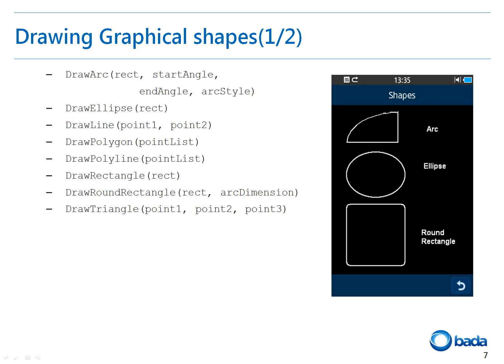Bada provides various shape drawing functions. The methods have a very simple and easy to understand naming convention — the name starts with 'draw' followed by the shape name. For example, the draw rectangle method will draw a rectangle. Bada supports the arc, ellipse, line, polygon, polyline, rectangle, round rectangle, and triangle drawing functions. The arguments accepted by these methods are in sync with what needs to be drawn. For example, draw triangle needs three points, draw ellipse needs the coordinates of the rectangle inside which it fits, and so on.